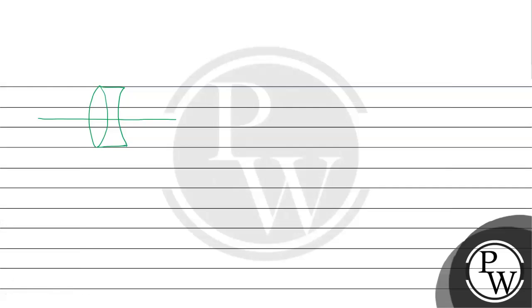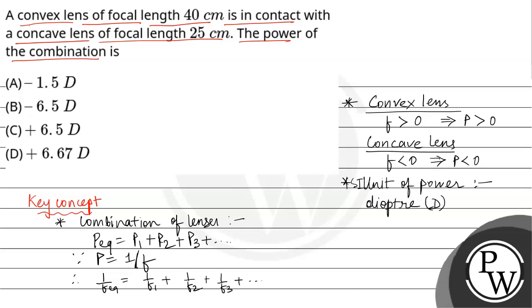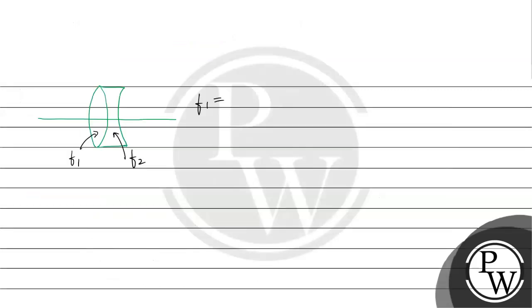Convex lens ka focal length, let it be F1. Question me diya hai ki F1 is equal to 40 cm for convex lens. 40 cm means 0.4 m.